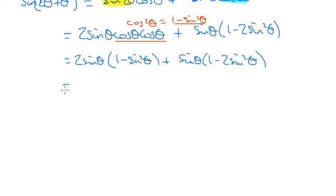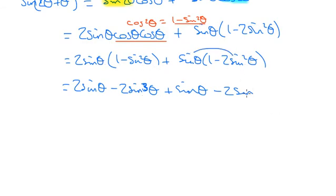If we expand all the brackets, we're going to get 2 sine theta minus 2 sine cubed theta. We're going to get another sine theta minus 2 sine... sorry, this would be cubed. Sine theta times sine squared theta is sine cubed theta. Because we're going to get another sine cubed theta from here.